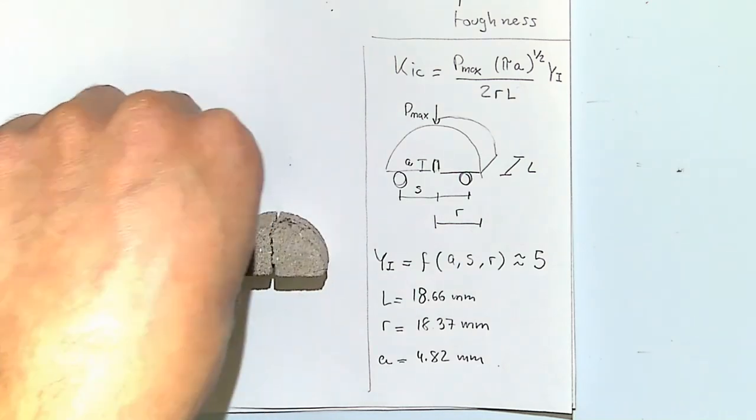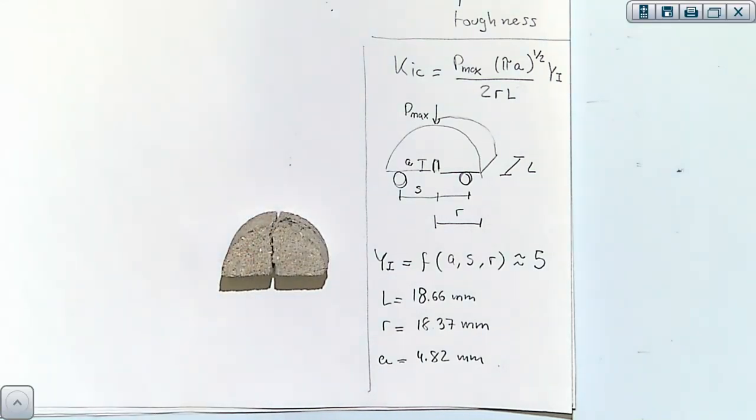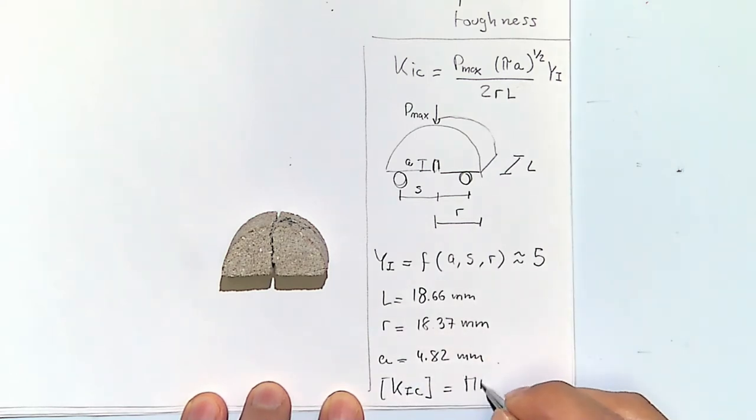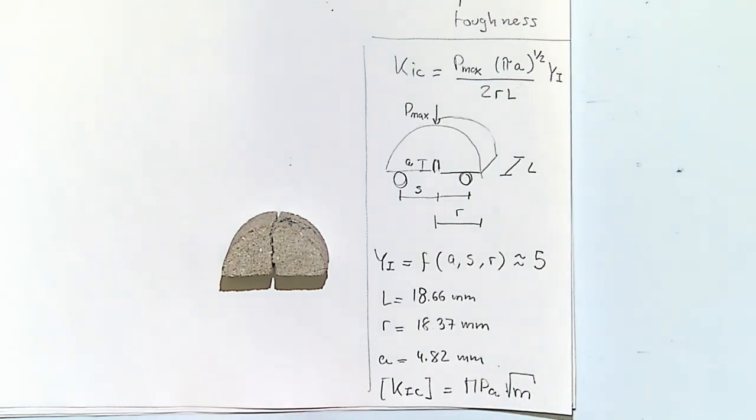The toughness, you will see, has some weird units. The units of toughness and stress intensity factor, we usually write it as MPa square root of meter, and you should get a value which is more or less around 0.5 MPa square root of meter.